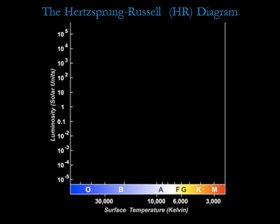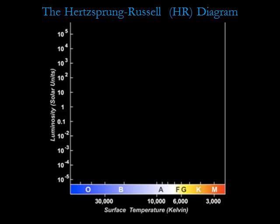An HR diagram also provides information about stellar radii because stars' luminosity depends on both surface temperature and surface area. For two stars that have the same surface temperature, one can be more luminous than the other only if it's larger in size. For two stars with different temperatures to have the same luminosity, the cooler star must be larger to keep up in luminosity with the hotter star.